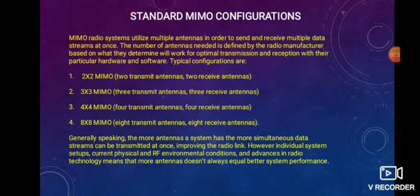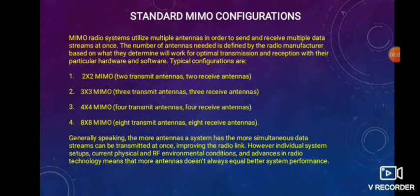Now, the standard MIMO configurations: a MIMO radio system utilizes multiple antennas to send and receive multiple data streams at once. The number of antennas needed is defined by the radio manufacturer based on optimal transmission and reception with their hardware and software. Typical configurations are 2x2 MIMO — 2 transmit and 2 receiver antennas; 3x3 MIMO — 3 transmitter and 3 receiver antennas; 4x4 MIMO — 4 transmit and 4 receiver antennas; and 8x8 MIMO — 8 transmitting and 8 receiver antennas.